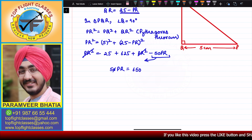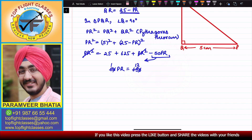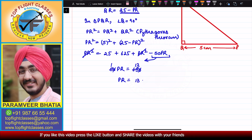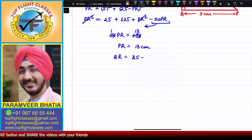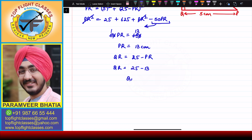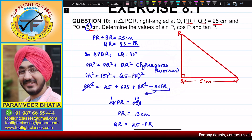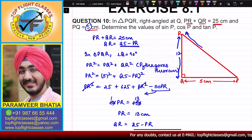The PR squared terms cancel on both sides. We get 0 equals 650 minus 50 PR, so 50 PR equals 650, giving PR equals 13 cm. Therefore, QR equals 25 minus PR equals 25 minus 13, so QR equals 12 cm.